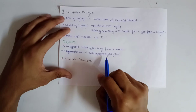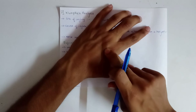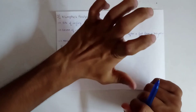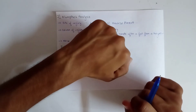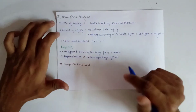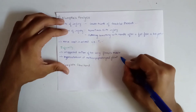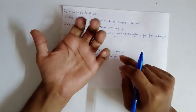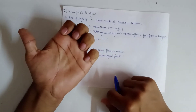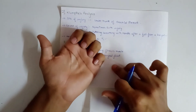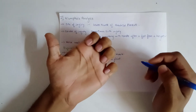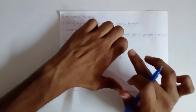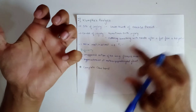The flexor muscles in the palm help in flexion of phalanges. In Klumpke's paralysis there is unopposed action of the long flexor muscles because the extensor muscles are paralyzed, leading to flexion of the phalanges. There is also hyperextension at the metacarpophalangeal joint — this is extension, this is hyperextension, this is flexion. Together, these lead to a complete claw hand.